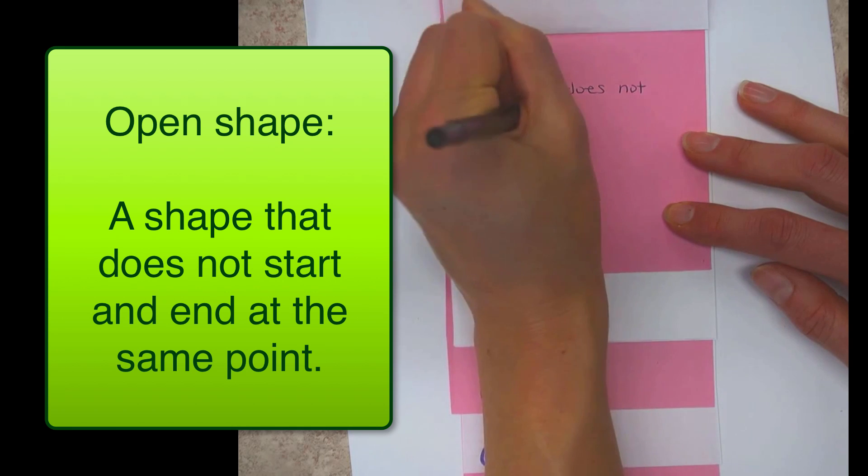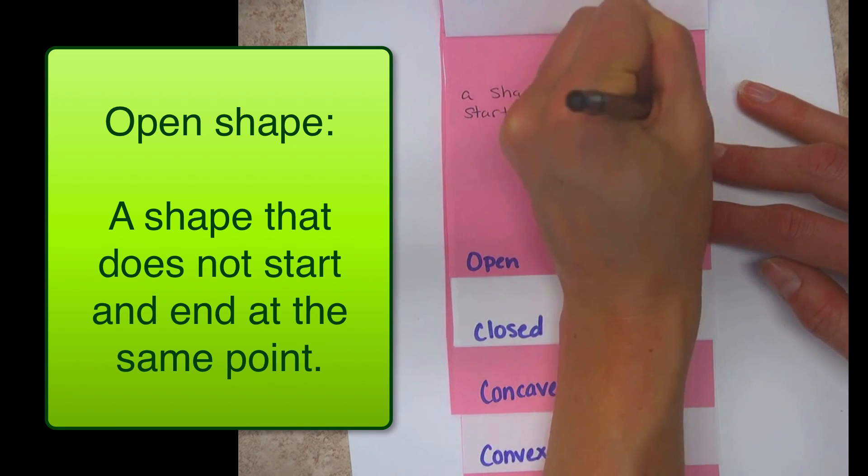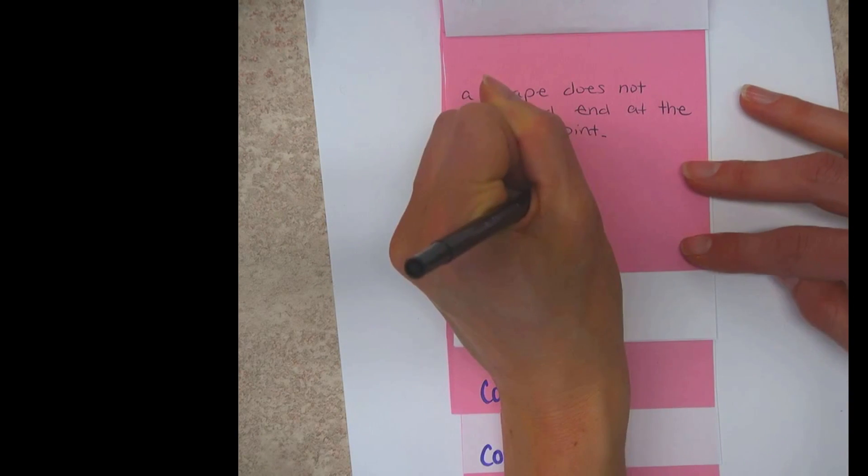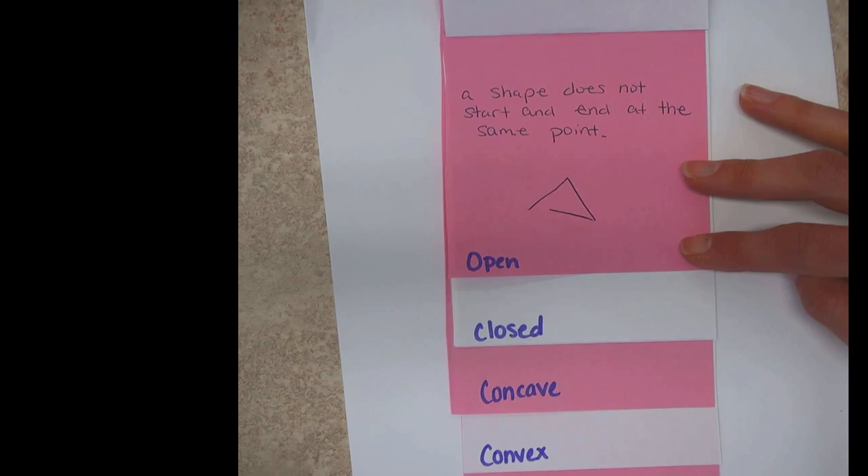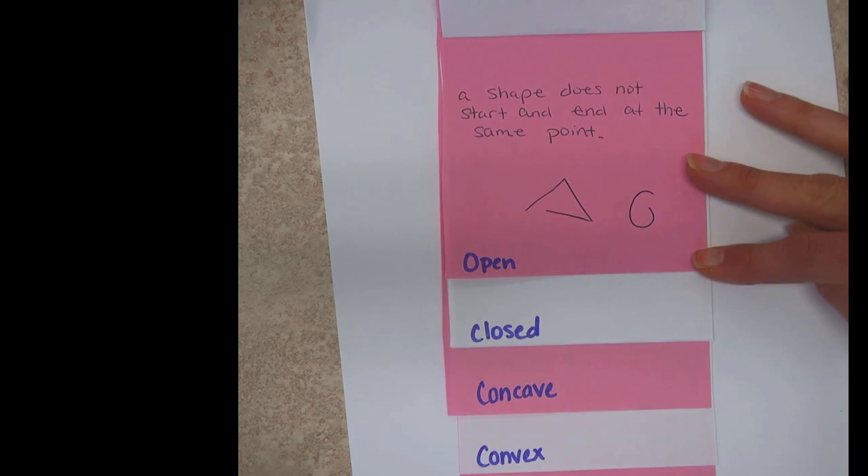So a shape that does not start and end at the same point. So it would be like a triangle that doesn't close or a quadrilateral that has a chunk taken out of one of the sides. So it will seem sort of weird to draw this. It could be something that just looks like that. Or that.